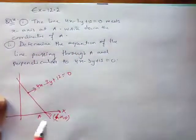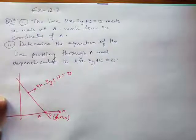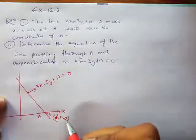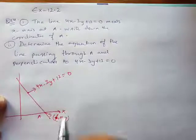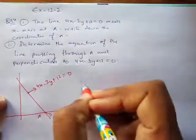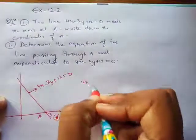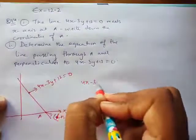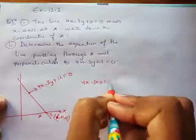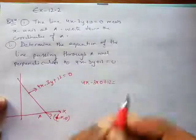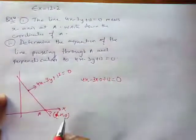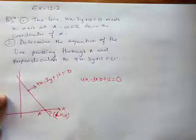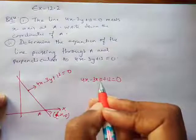I have to figure out the coordinates of A. I know the value of y is 0, and I have to find x. So I'm going to substitute y = 0 into the equation: 4x minus 3 times 0 plus 12 equals 0.